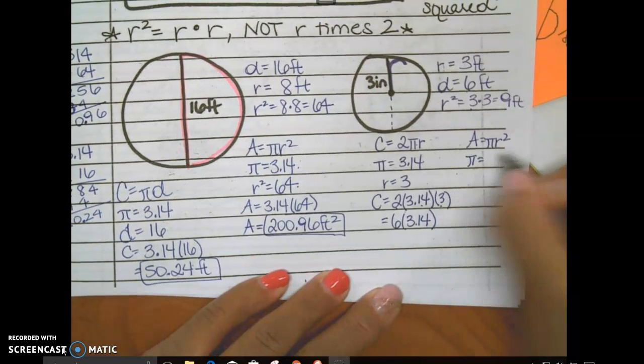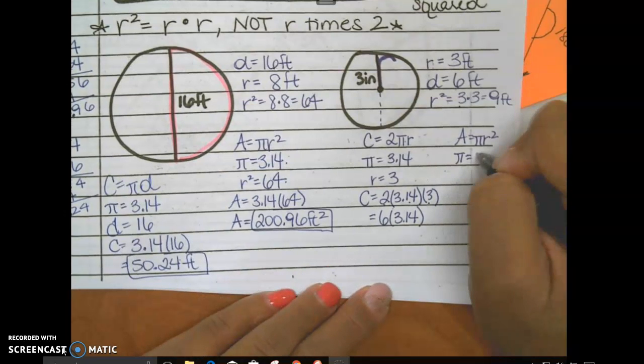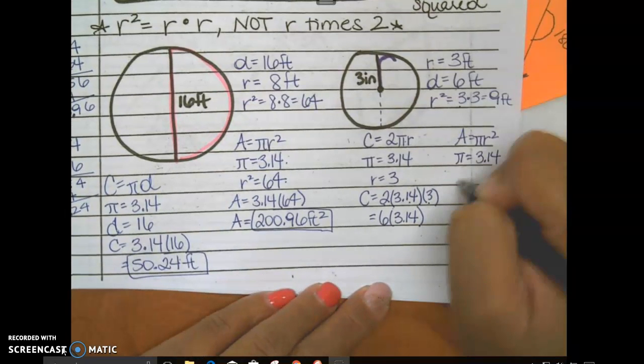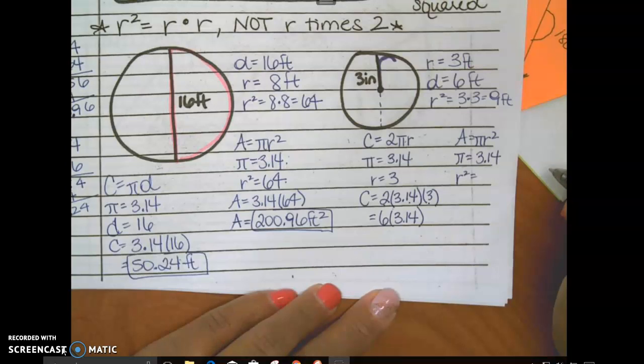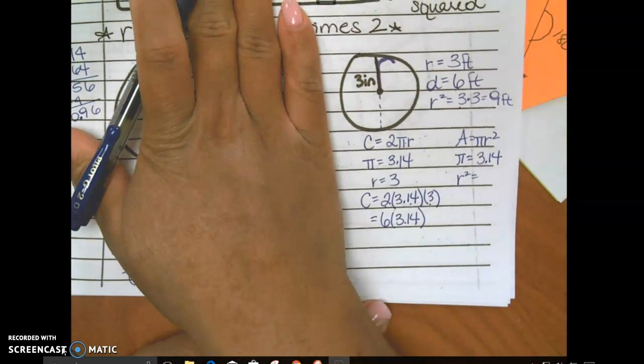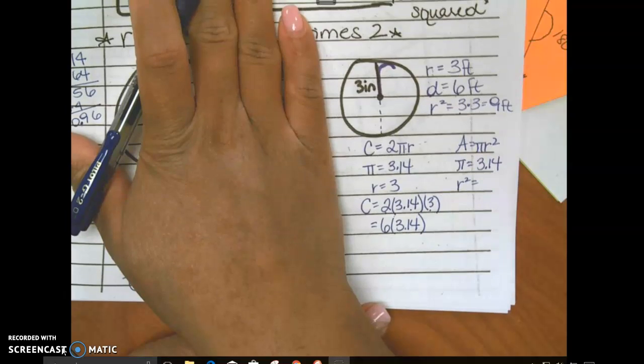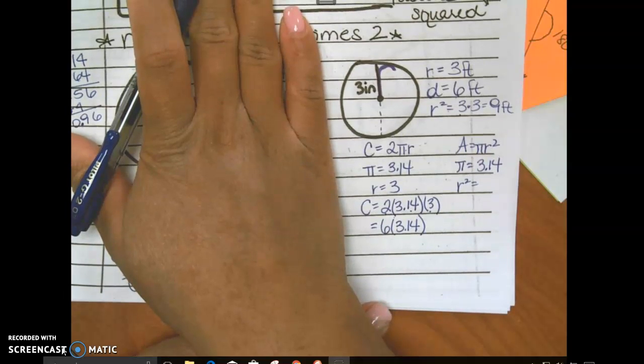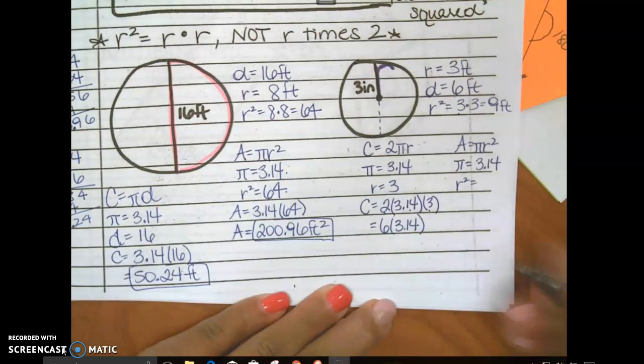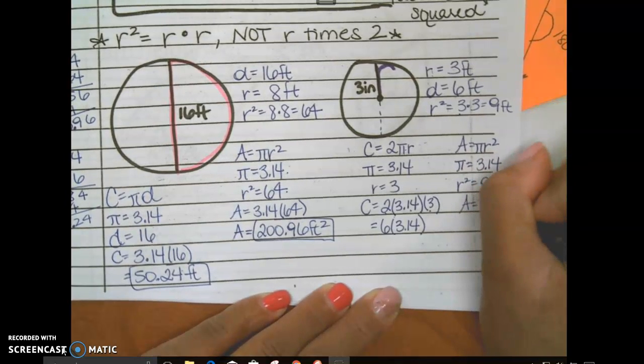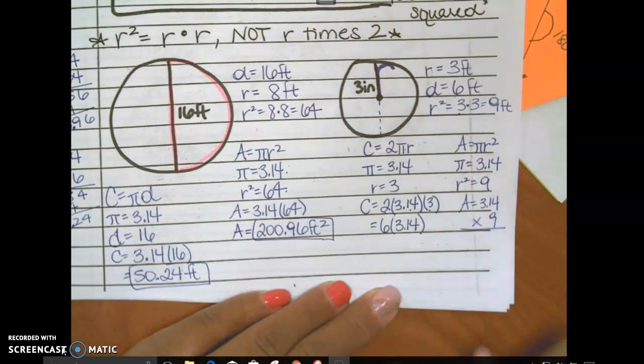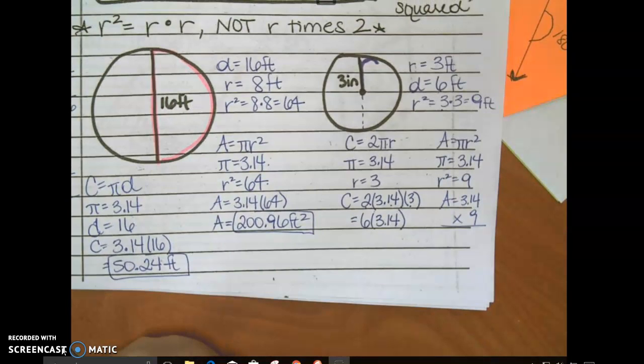Then over here I have pi, which is 3.14, and then my R squared, which is—I'm done with this circle. R squared is what? Look at where I wrote R squared, and what is my final answer? 9. So area over here equals 3.14 times 9. And I can just work this out over here. Go ahead and get it done.